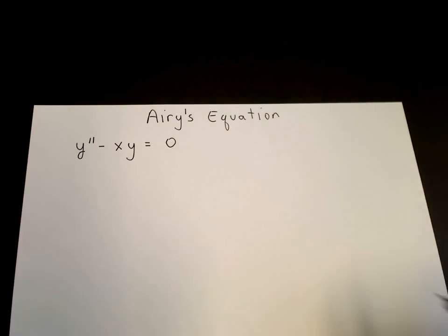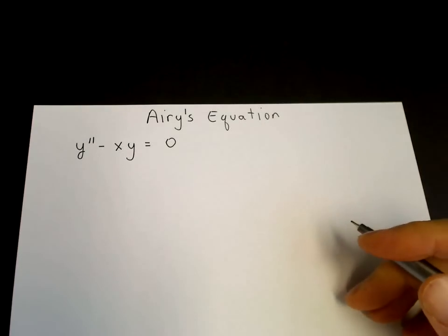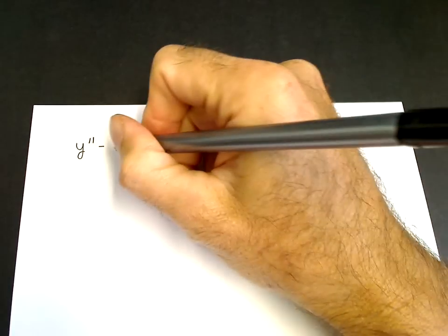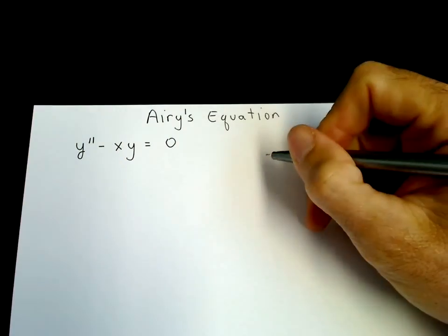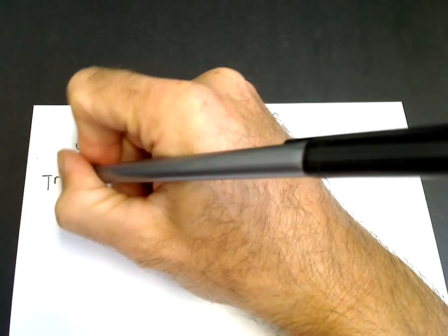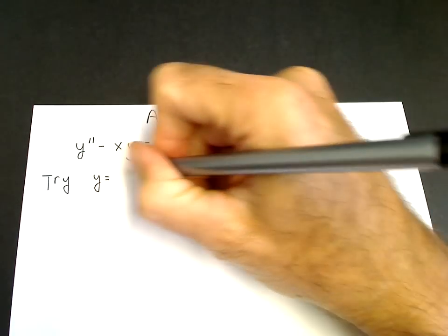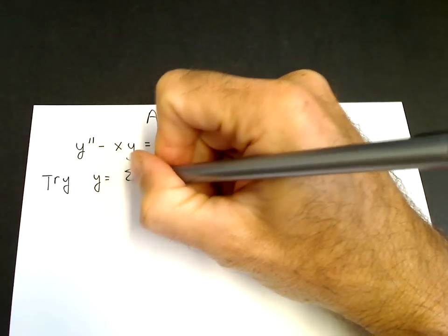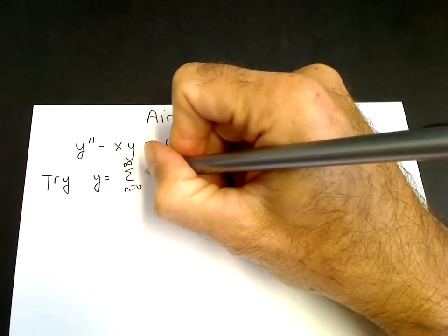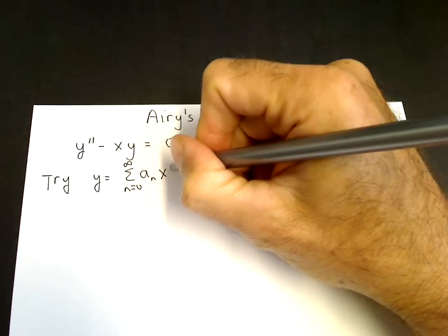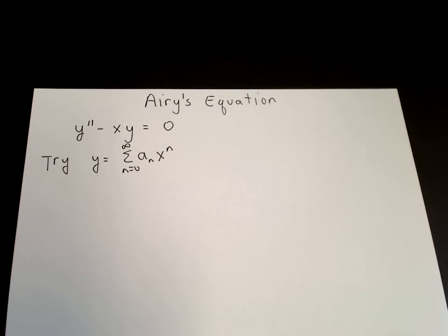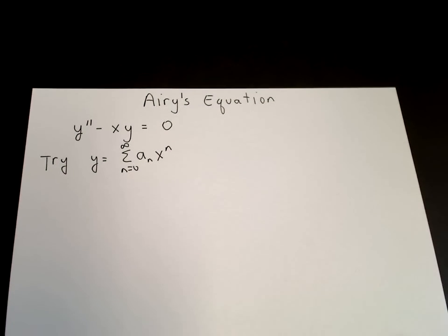Let's solve the Airy equation by series solution: y double prime minus xy equals zero. We try our series ansatz: the sum from n equals zero to infinity of a sub n times x to the n, and we substitute it into the Airy equation.